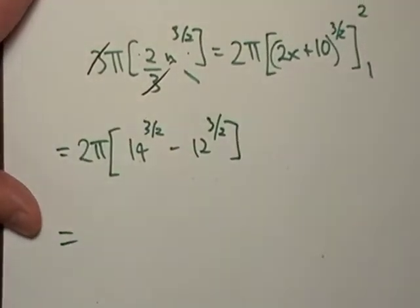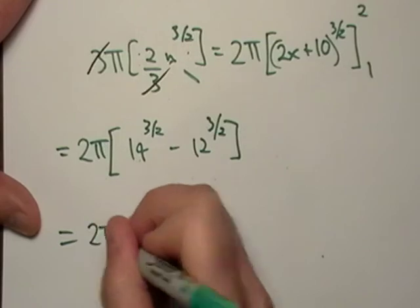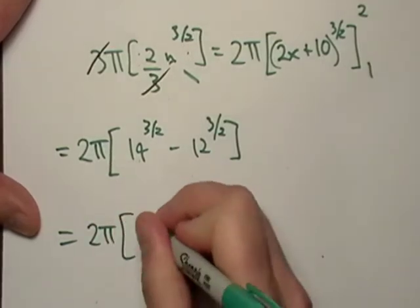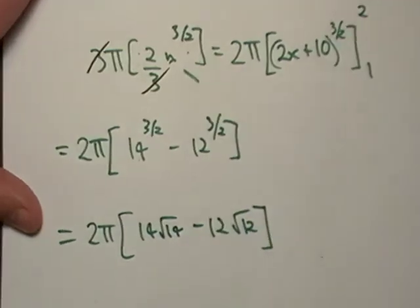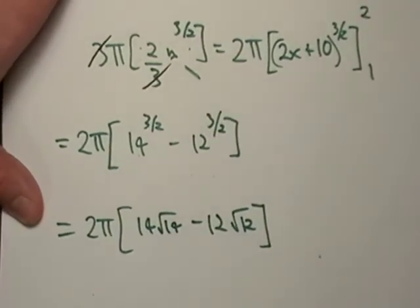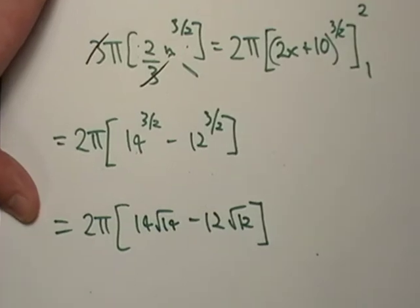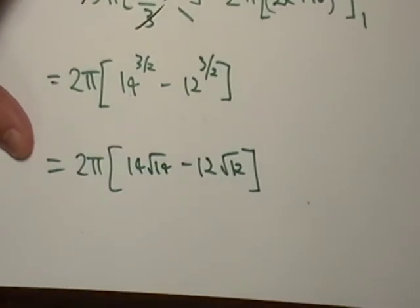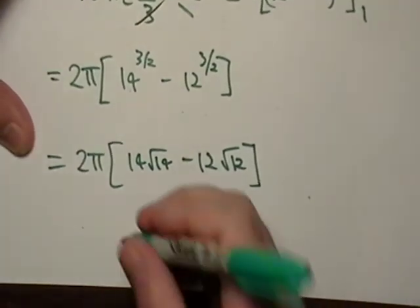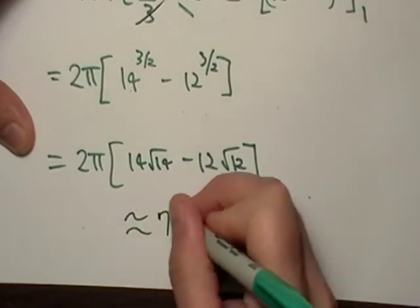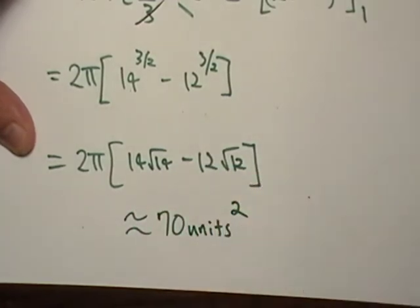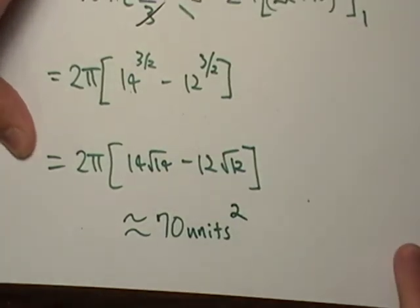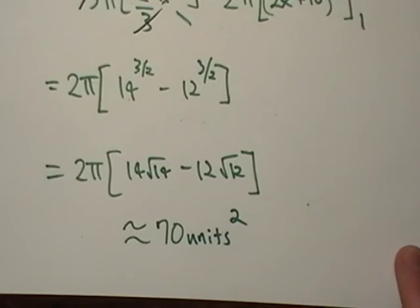From 1 to 2, that's going to be 14^(3/2) minus 12^(3/2). And that equals 2π, what is it, 14√14 minus 12√12. Racing against the clock here with my calculator. Type that in. That's approximately 70 units squared. Okay, I thought I was going to run out of time, but it turns out I have plenty of time left.